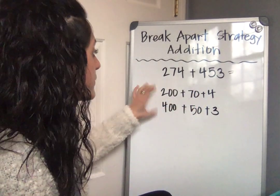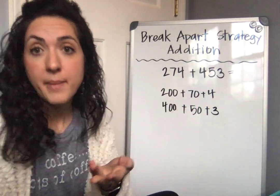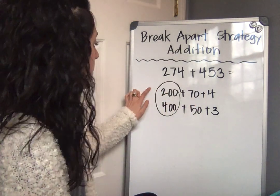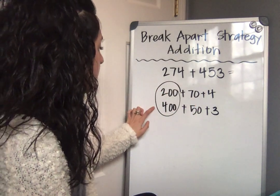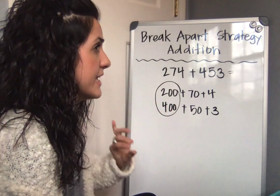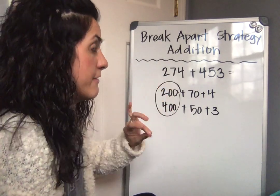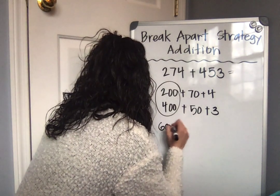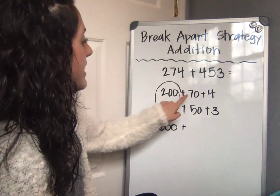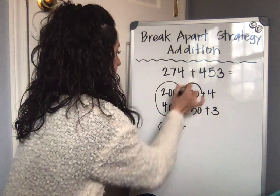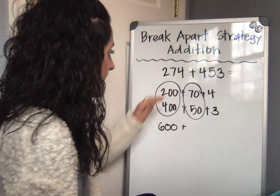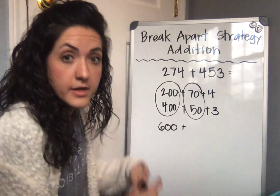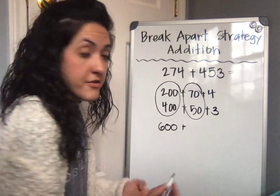Now I have to group them, or add them together by their place value. So I'm going to add together the hundreds first: 200 plus 400. I know there are two hundreds and four hundreds — two and four is six, so 600. Then I'm going to group my tens: 70 and 50. I have seven tens and five tens. I know seven and five is 12, so 12 tens is the same as 120.